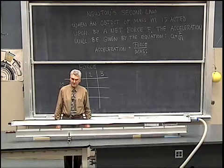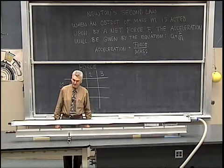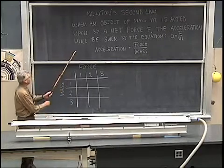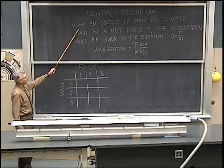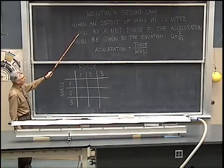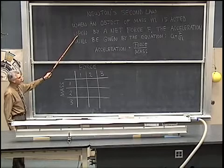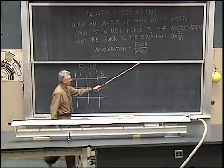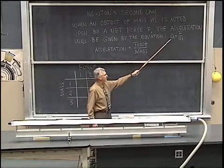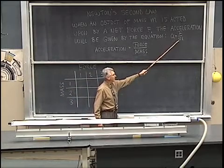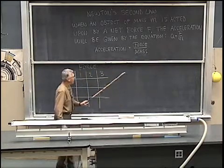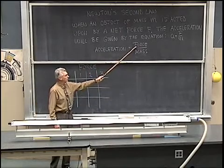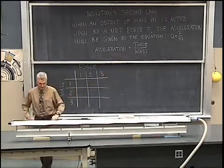Hello, I'm going to demonstrate Newton's second law of motion. Here we have Newton's second law stated: when an object of mass M is acted upon by a net force F, the acceleration will be given by the equation A equals F divided by M, or acceleration is equal to the force divided by the mass.